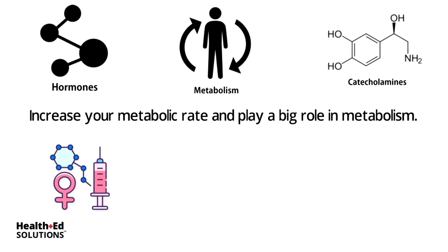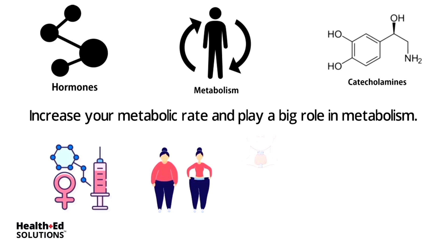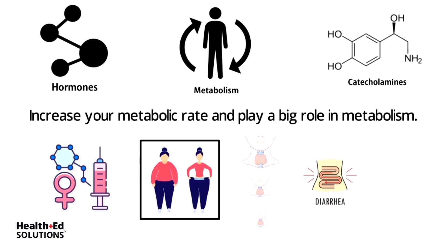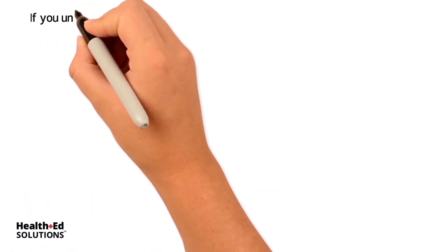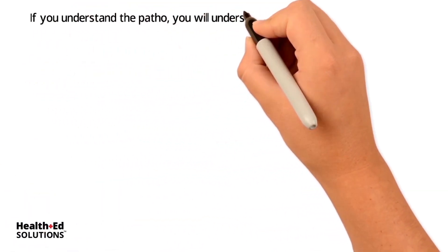With an increased metabolism due to excess amounts of T3 and T4, you're going to see signs such as weight loss — everything is going to be hyper, hyper, hyper. So weight loss, diarrhea, anxiousness, anxiety, maybe tremors — everything's just going to be sped up, including tachycardia.